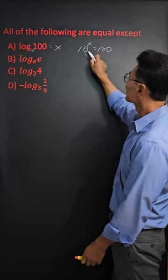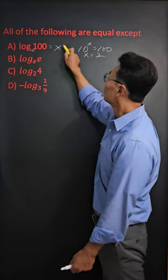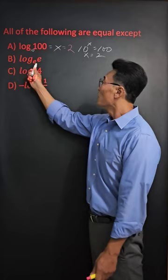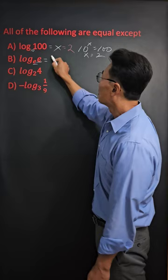x equals 2, which means that log of 100 will equal 2. Next, take a look at answer choice B. Whenever the base and the argument are the same, then the log of that will always equal 1.